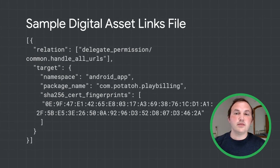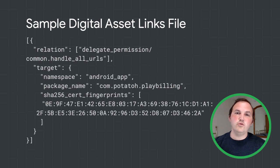The file should look something like this. The package name is a compiled name that uniquely identifies your application on Google Play and on your device. Package names cannot conflict with each other in the Play Store. The SHA-256 fingerprint is a cryptographically computed signature that can only be attributed to your signing keys to uniquely identify you. Every Android application is signed with a unique SHA-256 signing key, which makes it hard to impersonate you.